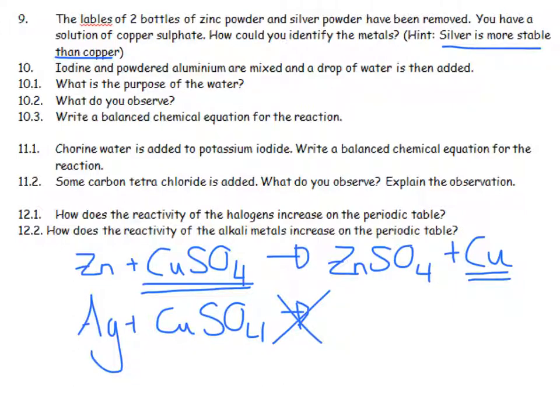We decided not to do 10, 11 and 12.1. 12.2, how does the reactivity of the alkali metals increase on the periodic table? And if you're just looking at the first group, you're going to find that going down, it becomes more and more reactive. Remember how explosive that caesium in water was. So the direction is going down.